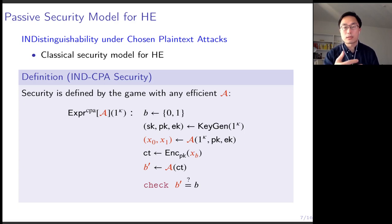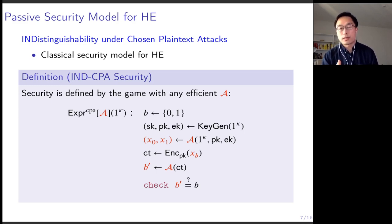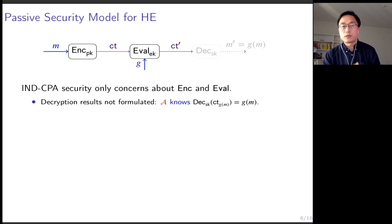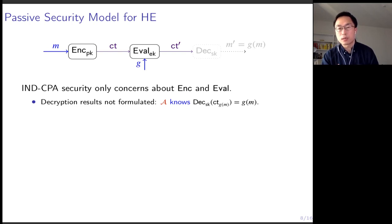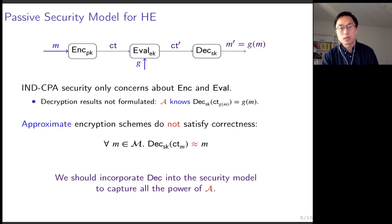For exact schemes, to formalize such a passive attacker, we typically use IND-CPA security, or indistinguishability under chosen plaintext attack. Such security is defined by the IND-CPA security game, which I will skip. What I want to emphasize is that the formulation of IND-CPA security does not consider the decryption function — it only concerns the encryption and evaluation functions of the scheme. This is fine for exact schemes, because the adversary already knows the decryption result due to the correctness requirement. But such correctness is not satisfied by approximate encryption schemes, so this brings up the question of whether we should incorporate the decryption function into the security definition.